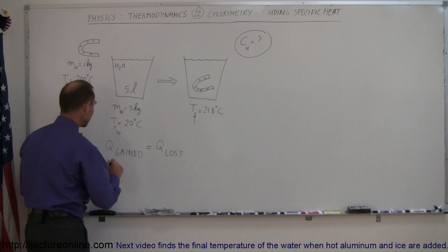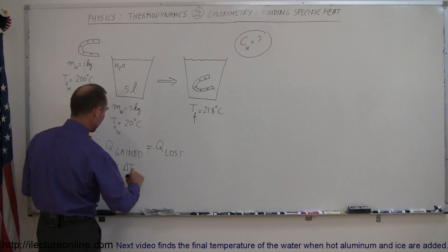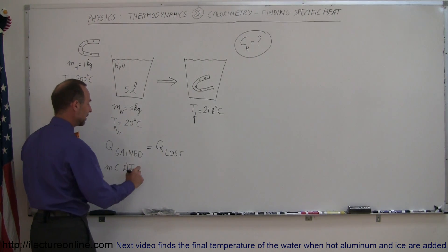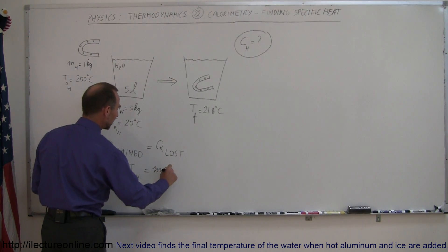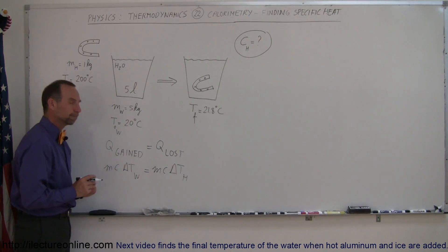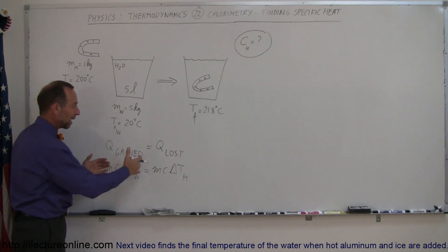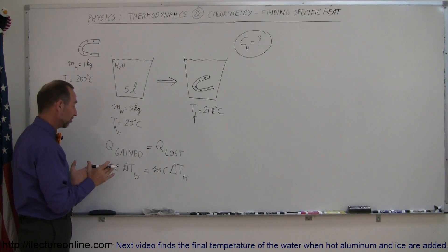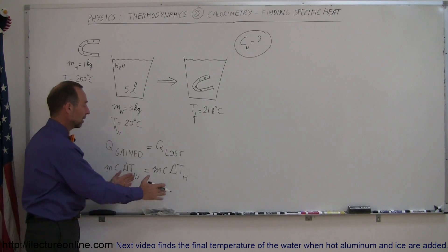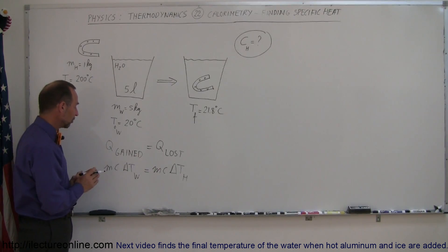Q gained, well that would be MC delta T for the water, because the water is what's gaining the heat. And that has to equal MC delta T for the horseshoe. So that's always the case. Now, sometimes we have more things in play here, and then we have to add to this equation on both sides. But here, it's simply straightforward. The water is gaining heat, and the horseshoe is losing heat. Now let's plug in what these things are.